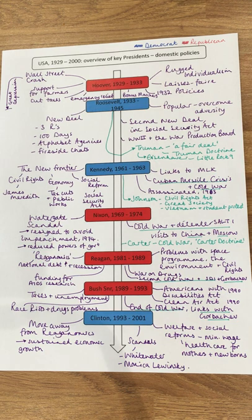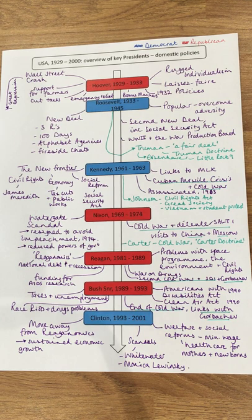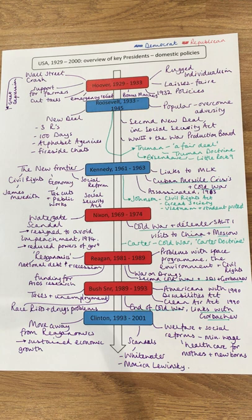However, some positives: although initially reluctant, Reagan did fund through the government a huge amount of research into AIDS during his presidency, and he declared a war on drugs to tackle drug-related problems throughout the USA. Reagan also has big connections to the Cold War theme in terms of his relationship with Gorbachev, which was initially negative but then turned much more positive.